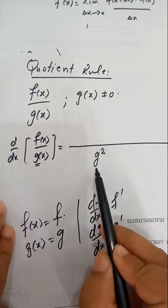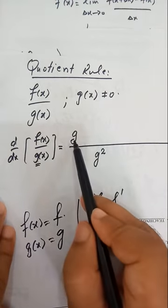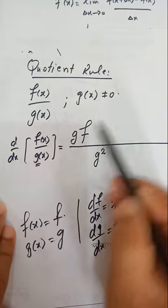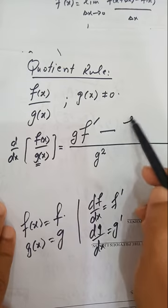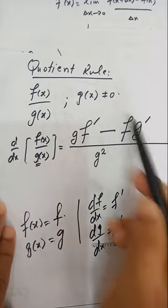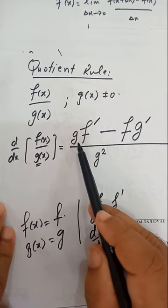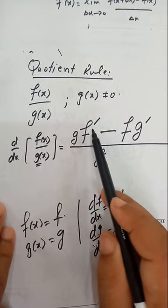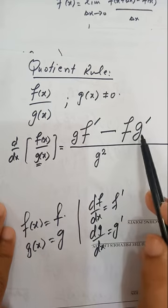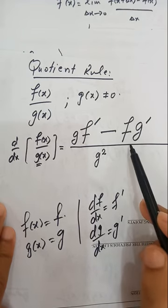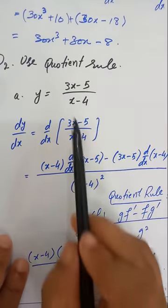The quotient rule states: when two functions are in ratio (quotient form), square the denominator function. Write the denominator function as it is, multiplied by the derivative of the numerator (f'), then minus the numerator function as it is multiplied by the derivative of the denominator (g'), all divided by the square of the denominator. So: d/dx(f/g) = (g·f' − f·g') / g². That is the quotient rule.